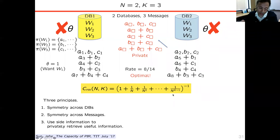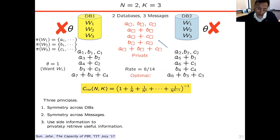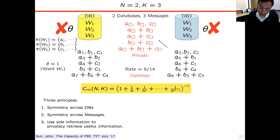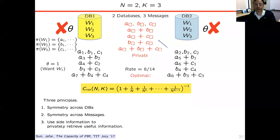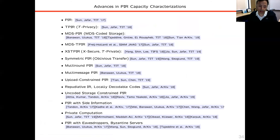This is the rate achieved by the scheme when you have N databases and K messages. It's an information theoretic result that needs a converse — a proof of optimality showing nothing better can be done. I will go to the proof of optimality when I talk about locally decodable codes, because that proof proves optimality not just for PIR but also for the corresponding problem of locally decodable codes.